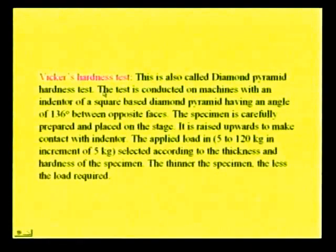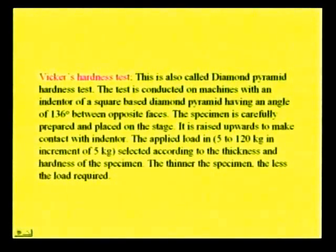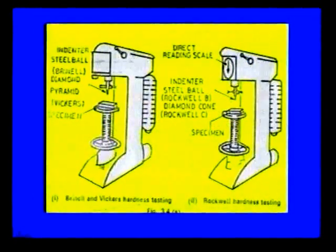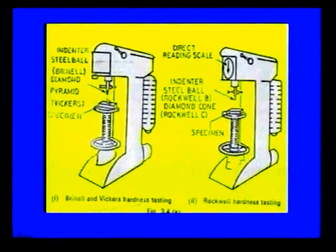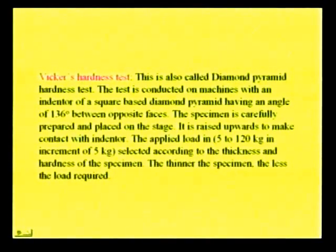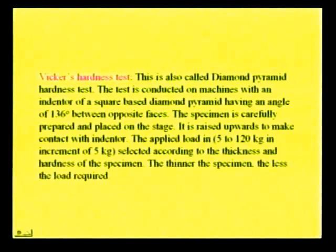The Vickers hardness test is another method for calculating hardness. This test is conducted on machines with an indenter of a square-based diamond pyramid having an included angle of 136 degrees. In the setup, the square-based diamond pyramid is fixed, a handle is used to lower it, and the work piece moves upward until it touches the pyramid, after which the load is applied. The applied load is selected according to the thickness and hardness of the specimen — thin sections use a different load than thick sections, and soft materials use a different load than hard materials.